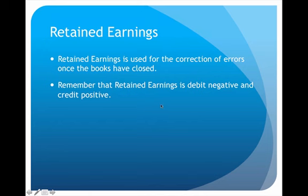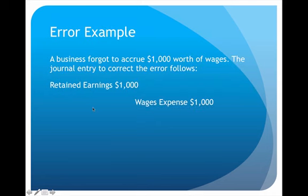When we fix these errors, we're going to fix them utilizing retained earnings. Think about it — retained earnings is that one component of capital that represents previous earnings, so that's going to be a way for us to go back and make these corrections. Always remember: retained earnings is debit negative and credit positive, and that'll help you make the decision about how to do the journal entries.